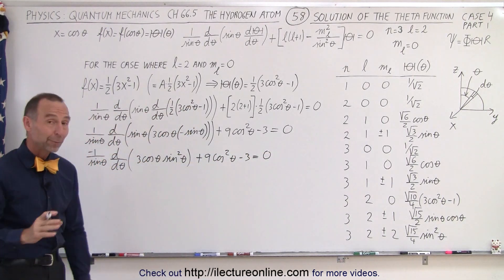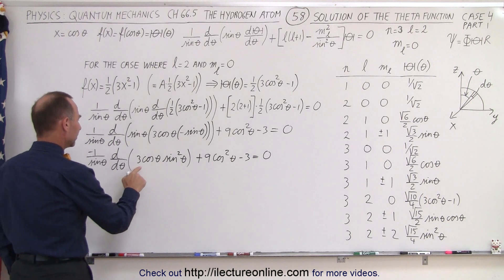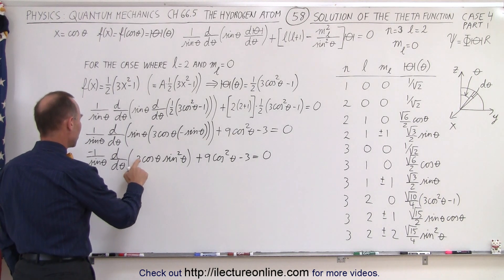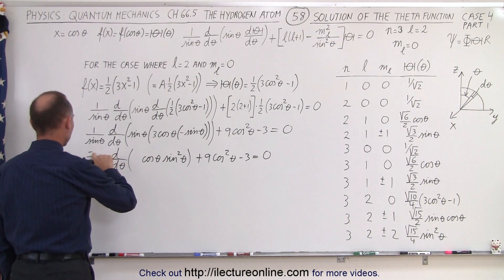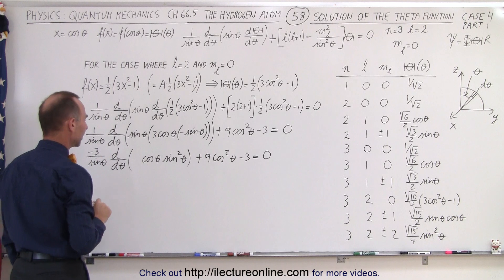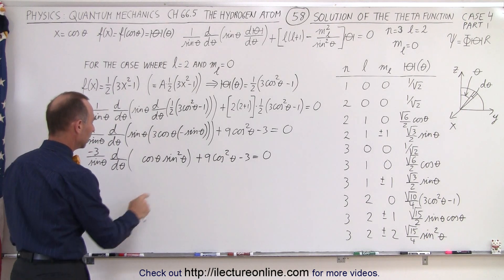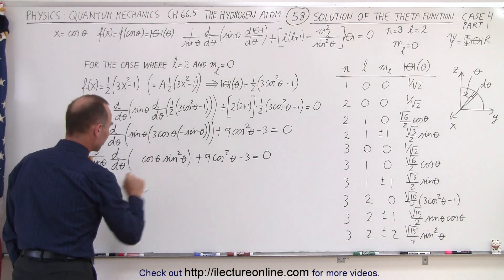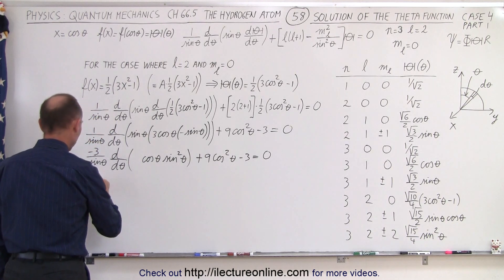Now we're ready to take the derivative. I'll factor the 3 out in front, making this negative 3. So, taking the derivative — this is a product — I have minus 3 divided by the sine of theta, and I need to take the derivative of cosine of theta times sine squared of theta using the product rule.